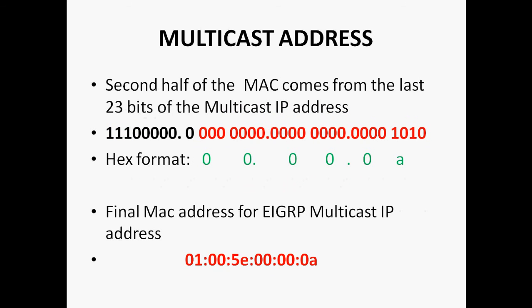The second half of the MAC address comes from the last 23 bits of the multicast IP address in binary format. The red color numbers shown here represent the binary format for the multicast address 224.0.0.10. The last 23 bits — indicated by the red color — are the bits from the EIGRP routing protocol multicast address that you then convert into hexadecimal format.